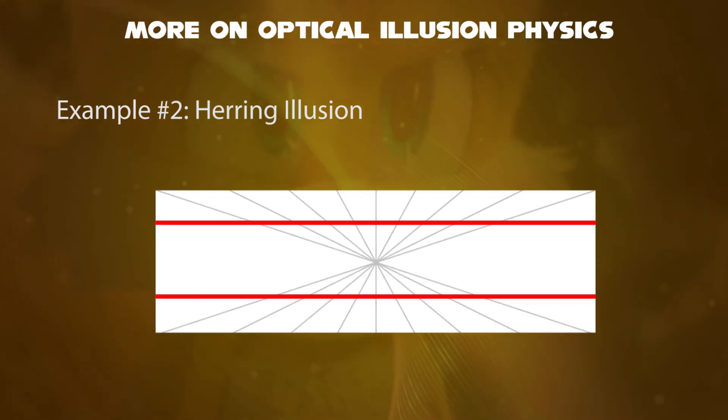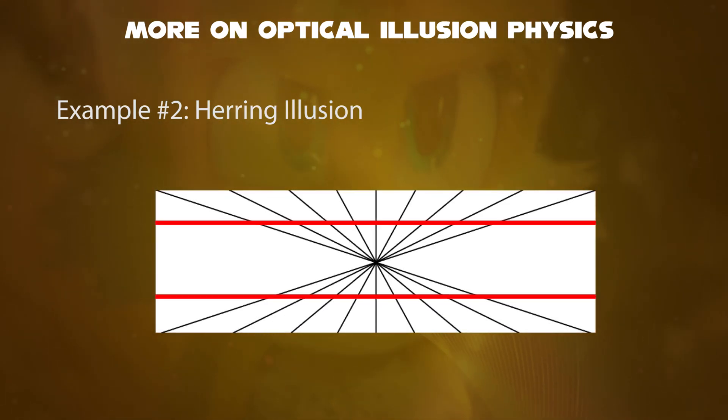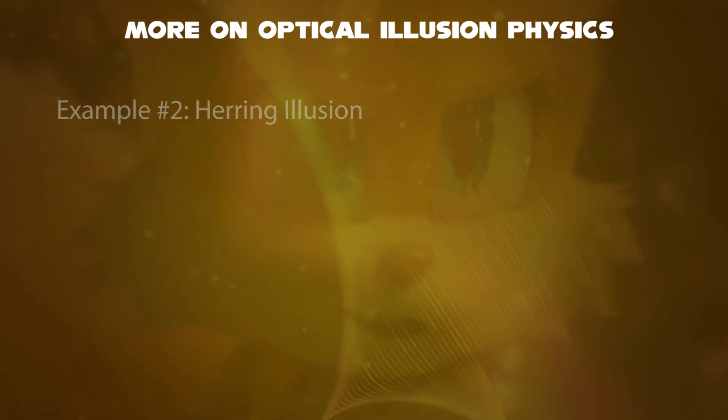Similarly, the two lines appear to curve due to the perspective lines in the white background after these were straight. Third example, called the T illusion.